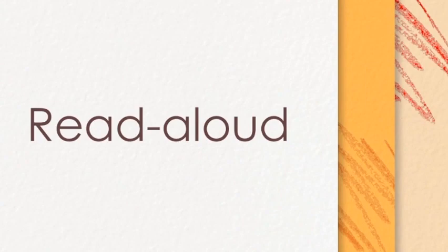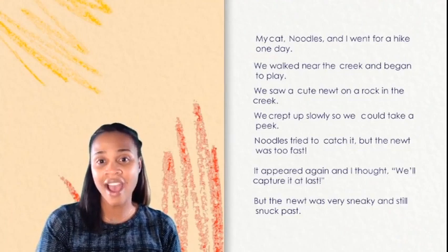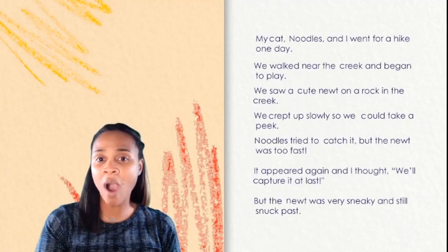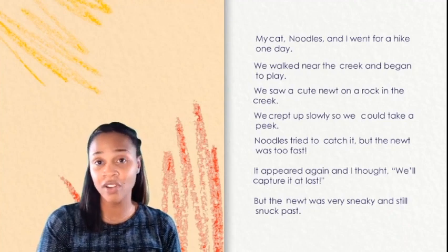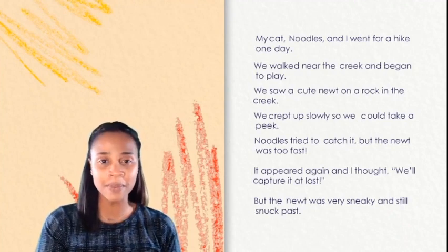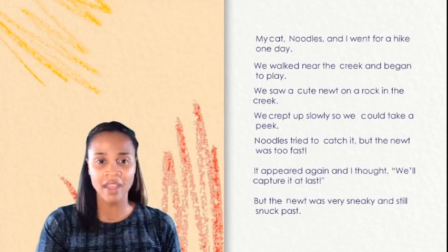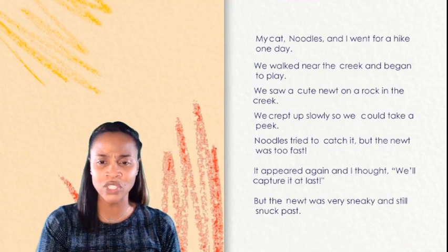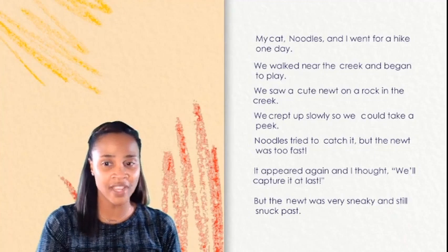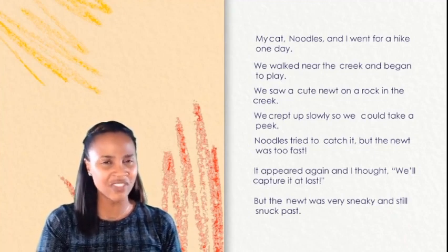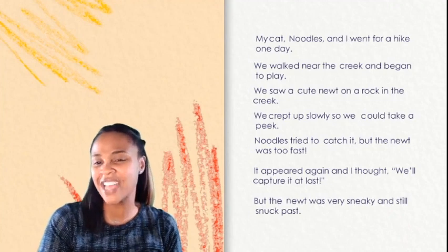Read aloud. I'm going to read the poem, My Cat Noodles, and I want you to listen carefully as I read through it. My Cat Noodles and I went for a hike one day. We walked near the creek and began to play. We saw a cute newt on a rock in the creek. We crept up slowly so we could take a peek. Noodles tried to catch it, but the newt was too fast. It appeared again, and I thought, we'll capture it at last. But the newt was very sneaky and still snuck past.